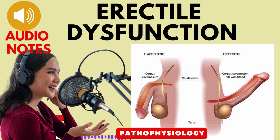Oral phosphodiesterase inhibitors, including sildenafil, vardenafil, avanafil, and tadalafil, are commonly used for ED. These drugs work by inhibiting phosphodiesterase type 5, promoting smooth muscle relaxation necessary for erection. However, they come with potential side effects, and caution is advised, especially when used concomitantly with nitrates. For individuals who cannot sustain an erection, mechanical devices such as constriction rings or vacuum erection devices may be employed.